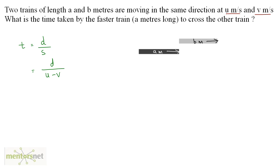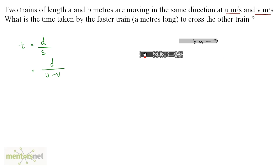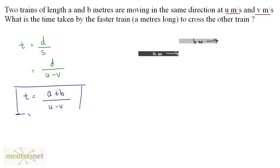Now you have to calculate the distance traveled. This black train has to cross the gray train completely. It has to travel the distance of the other train's length, which is b, plus its own length. So the distance will be a plus b. We have a plus b as the distance and the relative speed is u minus v. So this is the formula for trains moving in the same direction: the time taken for the faster train to cross the slower train is a plus b divided by u minus v.